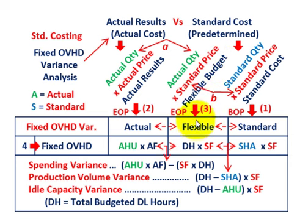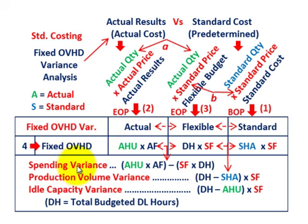Let's look at this in terms of a table where we'll calculate these different variances. For our fixed overhead variance, we're going to have three different variances: a spending variance, a production volume variance, and an idle capacity variance.